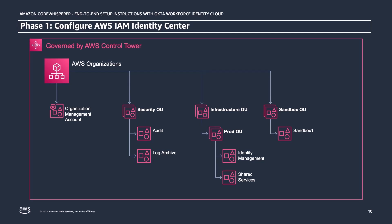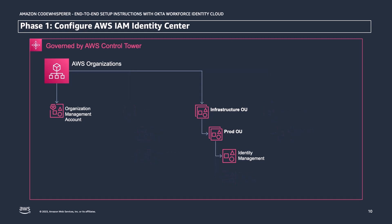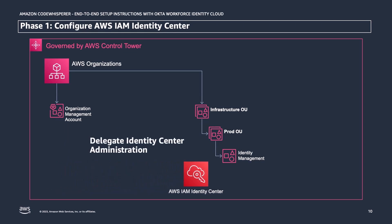Let's focus on the two AWS accounts involved in configuring access to CodeWhisperer: the top-level organization management account and a dedicated account for identity management functions. Since IAM Identity Center is designed to provision workforce access to all accounts in an AWS organization, it must first be enabled in the organization management account. Because the management account contains some of the most sensitive configurations and governance functions, you really want to limit the number of people who can access it. So the first thing we will do after enabling Identity Center is delegate administration to the identity management account, where all further configuration will happen.